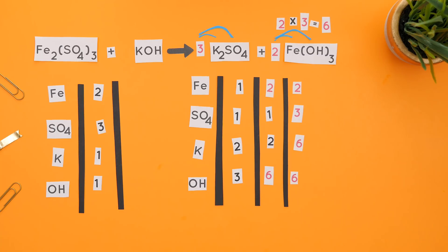To balance the Ks and OHs, we will place a six in front of potassium hydroxide. We now have six Ks and six OHs, and everything is balanced.